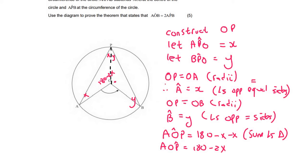And then we're going to do the same for this one. So we're going to say angle BOP is equal to 180 minus Y minus Y. And that's also sum angles of a triangle. And so we can say that angle BOP is equal to 180 minus 2Y. So let's fill that in. 180 minus 2Y.